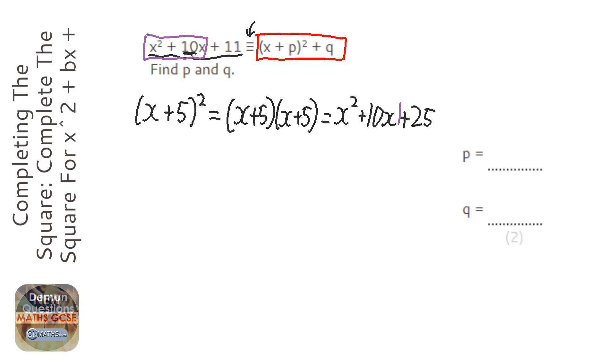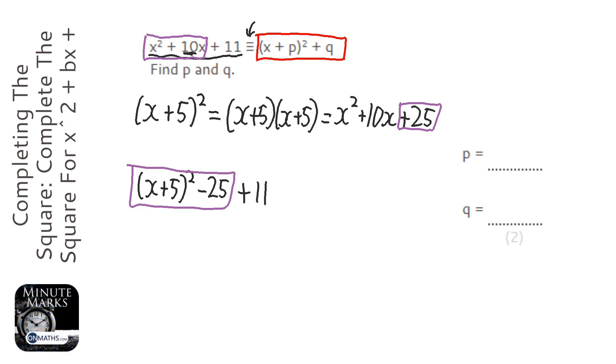So, when I expand that, it creates a 25, which I don't want. So, what I'm going to do is I'm going to put the brackets down, and then I'm going to take away 25 because it creates a 25 that I don't want. And then I'm just going to finish it off because it says plus 11.